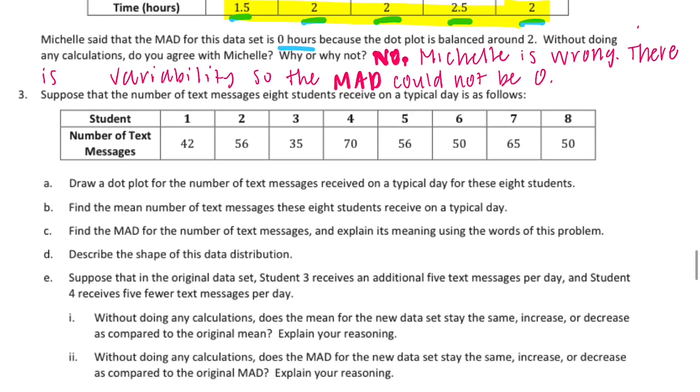Number three, suppose that the number of text messages eight students receive on a typical day is as follows. So there are eight students, and they all get between, let's say, 42 and 70 text messages per day. Draw a dot plot of the number of text messages received on a typical day for these eight students. So we found that the low was 42, the high was 70. So let's go ahead and draw our dot plot.